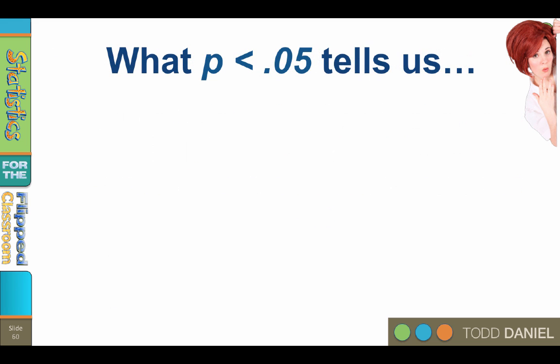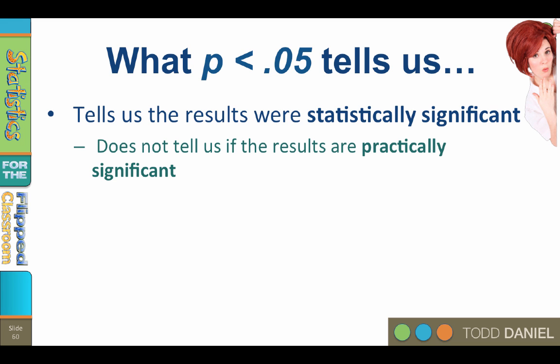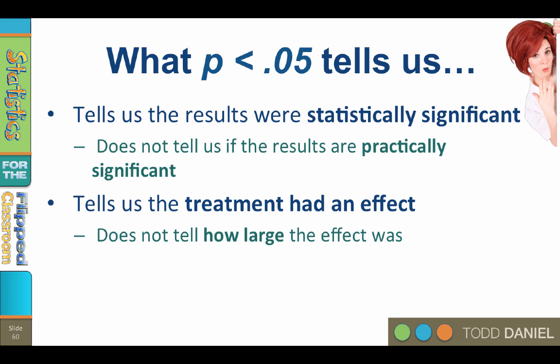What p less than 0.05 actually tells us is that the results were statistically significant, but it does not tell us whether the results are practically significant. In other words, do these results really matter in the real world? Statistical significance tells us that the treatment had an effect, most likely, but it does not tell us how large that effect was.